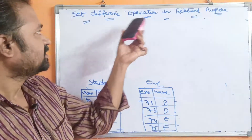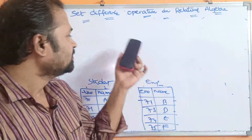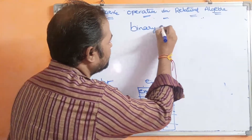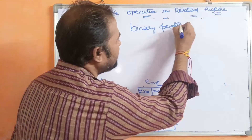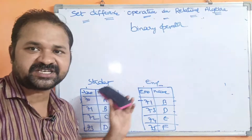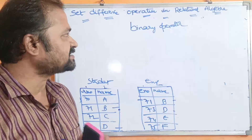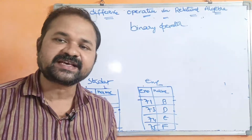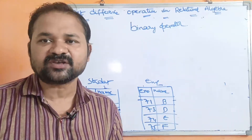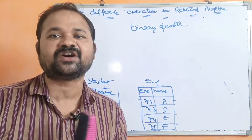Let us discuss the set difference operation in relational algebra. The set difference operator is called a binary operator — binary means 2. In order to perform set difference operation, we require 2 relations or 2 tables. This is why it is called a binary operator, whereas the select operator and project operator are called unary operators, because they require only one relation or one table.